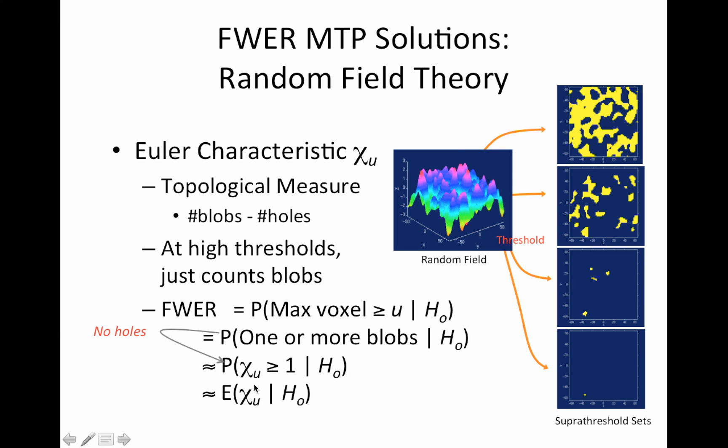It turns out this doesn't have a super sweet equation associated with it. But if we further assume there's never more than one blob, then that is equal to the expected value of the Euler characteristic. And this thing we do have an equation for.